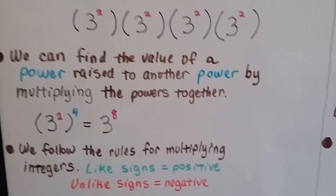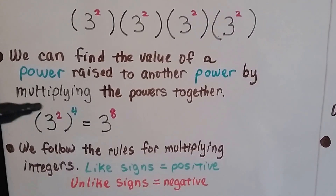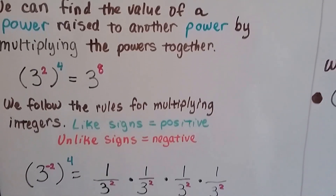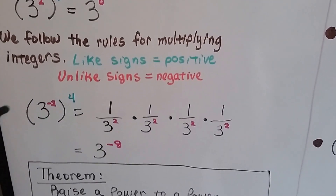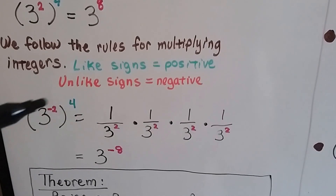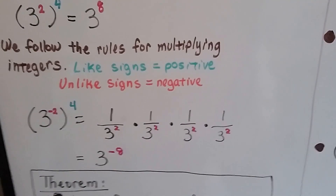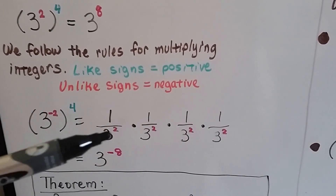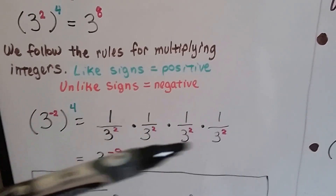We follow the rules for multiplying integers. So if they're like signs, like these are both positive, I'm going to have a positive 8. If they're unlike signs, they're going to make a negative. So if we have a negative 2 as an exponent, when we multiply them, we're going to get a negative 8. And that makes a fraction — it's like saying 1 divided by 3 squared 4 times.